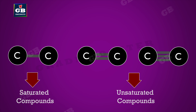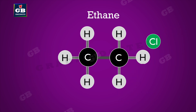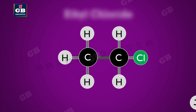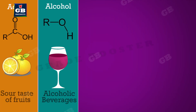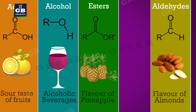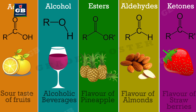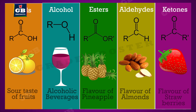Compounds of carbon which are linked by only single bonds between the carbon atoms are called saturated carbon compounds. Compounds of carbon having double or triple bonds between their carbon atoms are called unsaturated carbon compounds. The hydrogens in a hydrocarbon chain are replaced by certain functional groups to form a wide variety of compounds like carboxylic acids, alcohols, esters, aldehydes, ketones, etc.